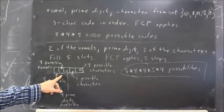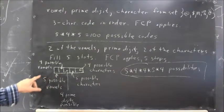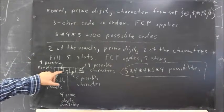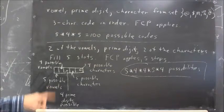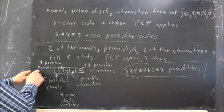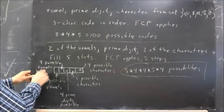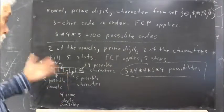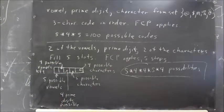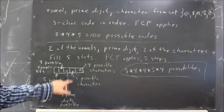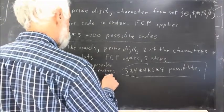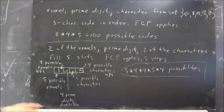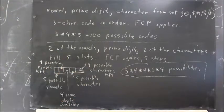Our second step, we're going to choose a vowel, but we can't choose the one we did before because repetitions aren't allowed. There are four possible vowels left. Then, there are four possible prime digits. It doesn't depend on what we chose for our vowels. Then five possible characters, and then four possible characters are left, so the number of possibilities is by the fundamental counting principle, five times four times four times five times four.